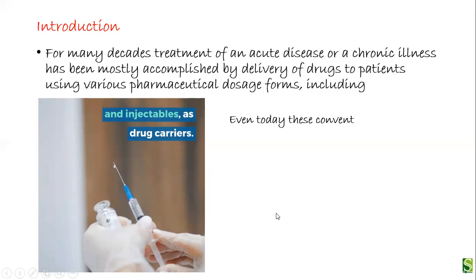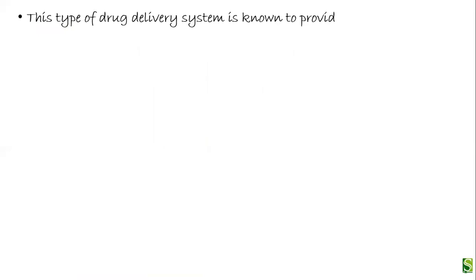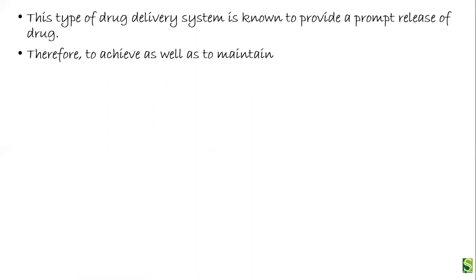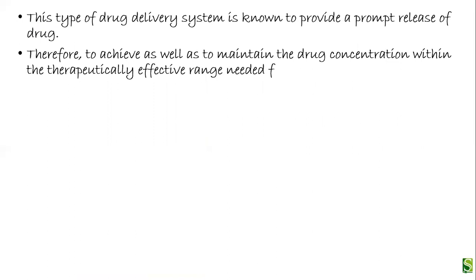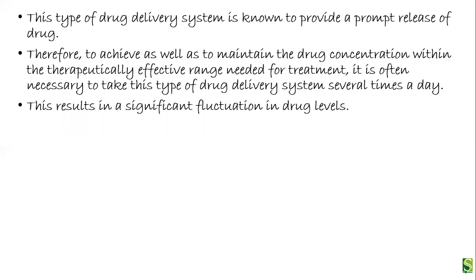Even today these dosage forms or conventional drug delivery systems are the primary pharmaceutical products and most commonly seen in the prescription and over-the-counter drug marketplace. This type of drug delivery system is known to provide a prompt release of drug. Therefore, to achieve and maintain the drug concentration within the therapeutically effective range needed for treatment, it is often necessary to take this type of drug delivery system several times a day. So we can say the drug has to be taken frequently, which results in significant fluctuation in the drug levels within the plasma.